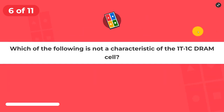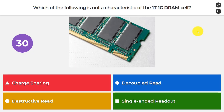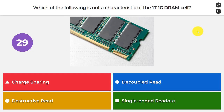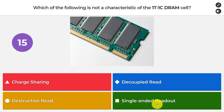Question number six: which of the following is NOT a characteristic of the 1T1C DRAM cell? Options: charge sharing, decoupled reads, destructive reads, or single-ended readout? The one that is NOT a characteristic is decoupled reads.